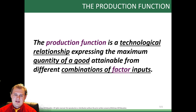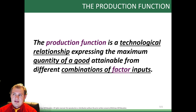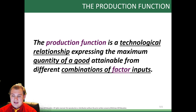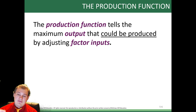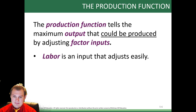The production function is a technological relationship expressing the maximum quantity of a good attainable from different combinations of factor inputs. In other words, they're going to look at all the factors going into it and try to figure out what's coming out. They're going to see what the maximum output you can get is, and you'll be able to adjust inputs to see what gives you the right output you need.